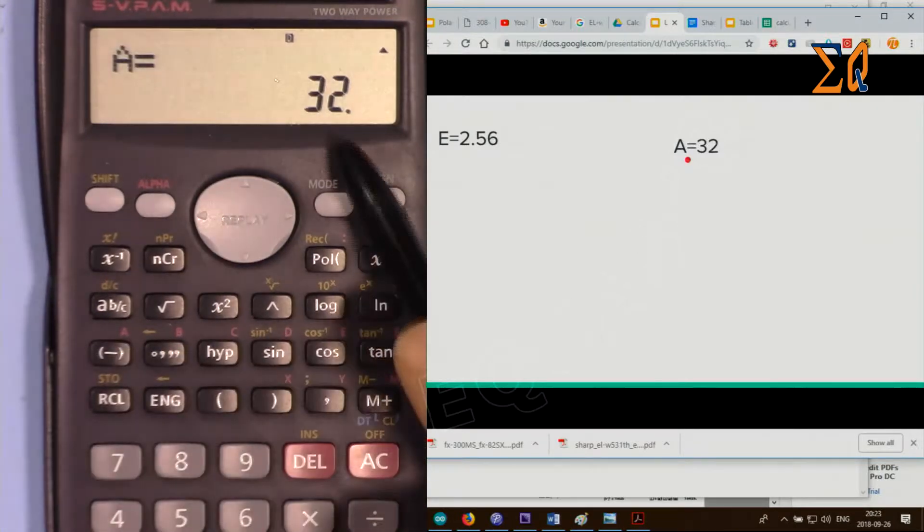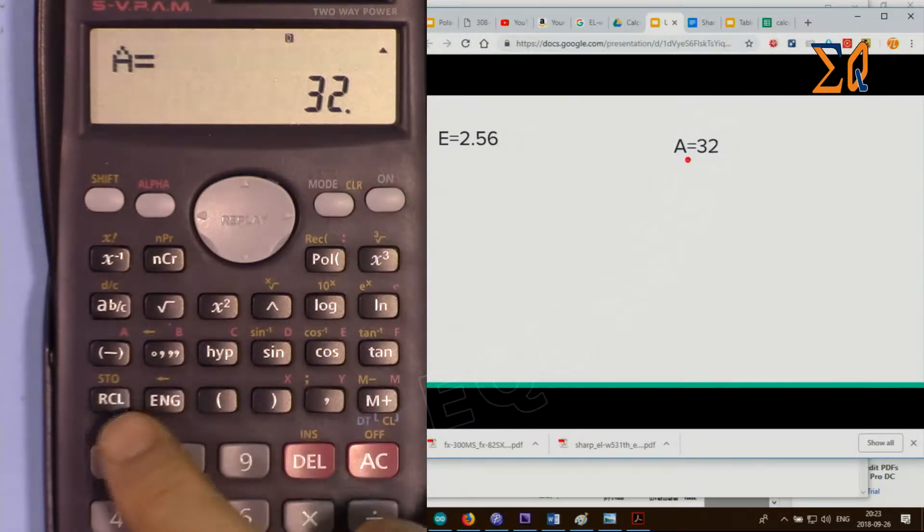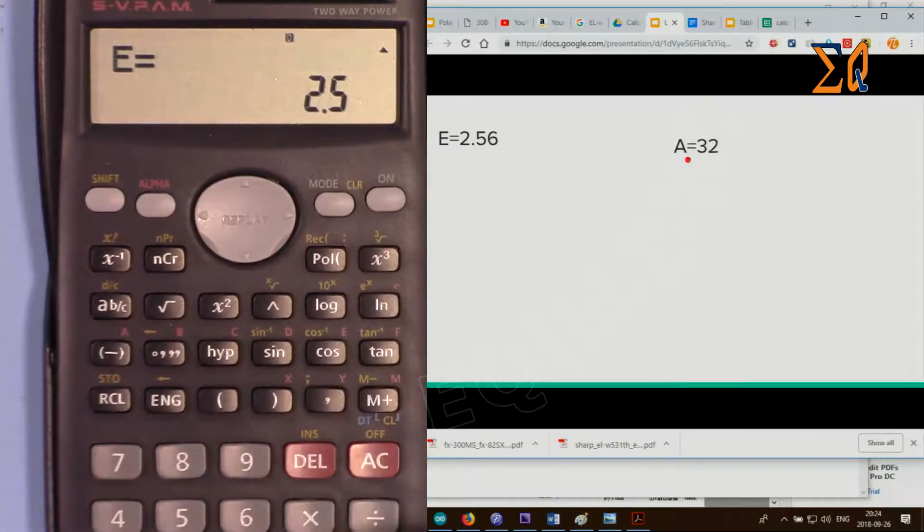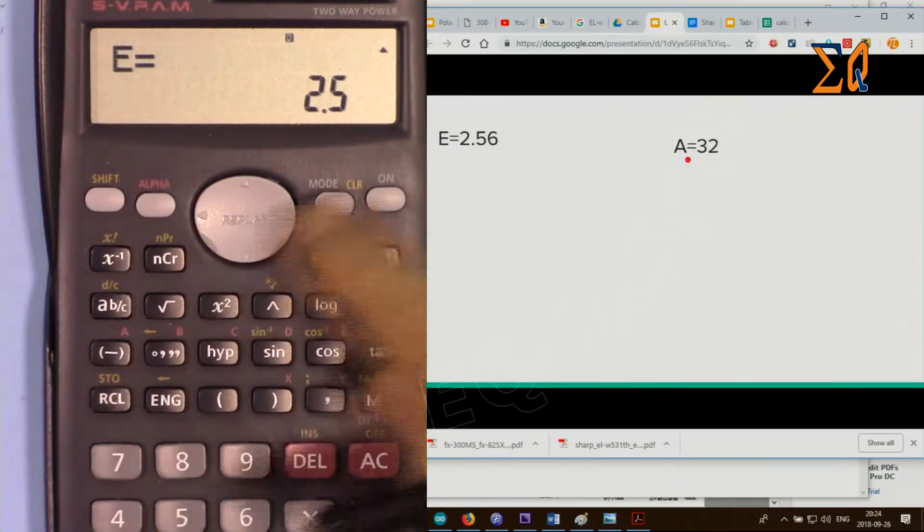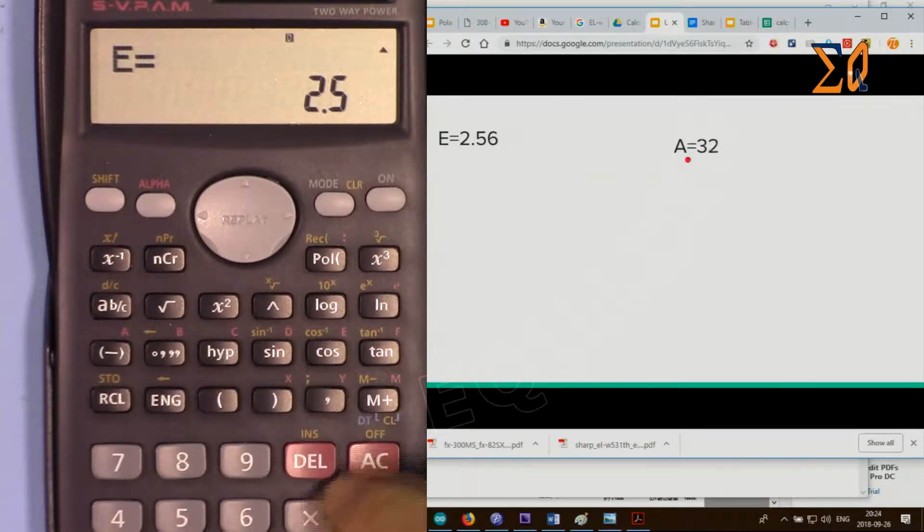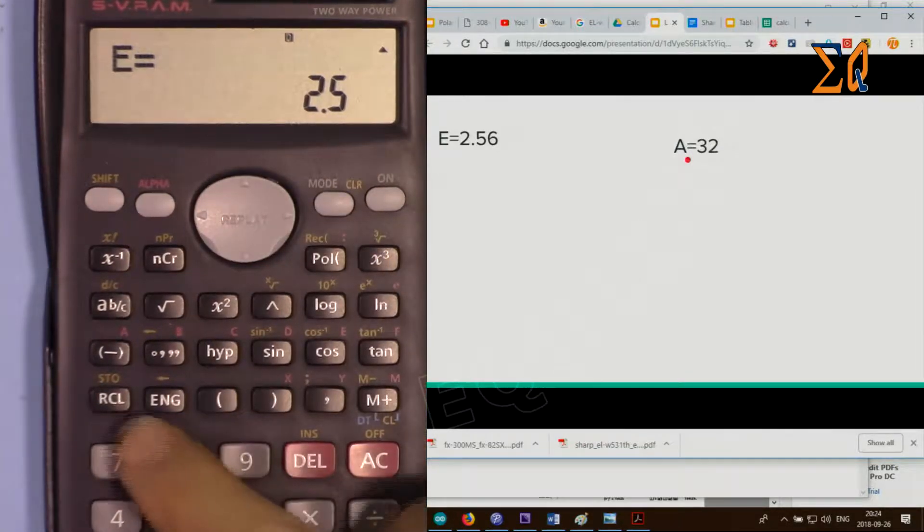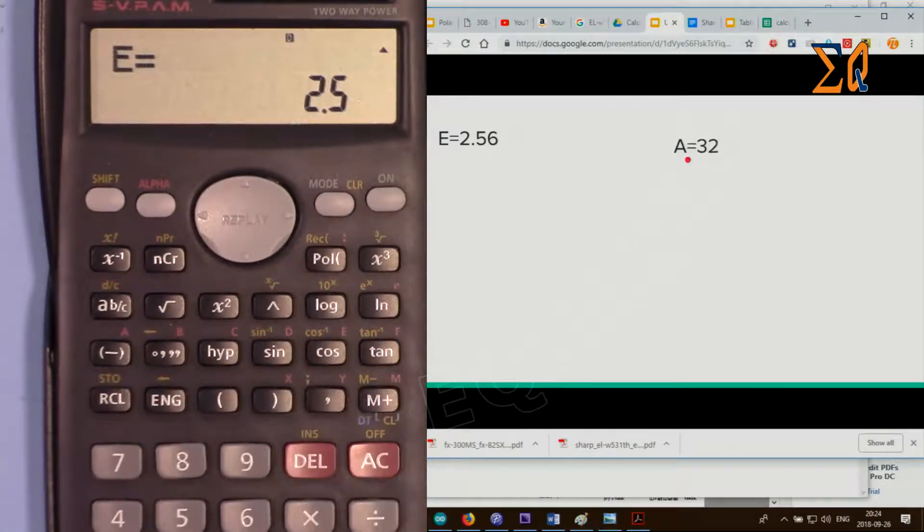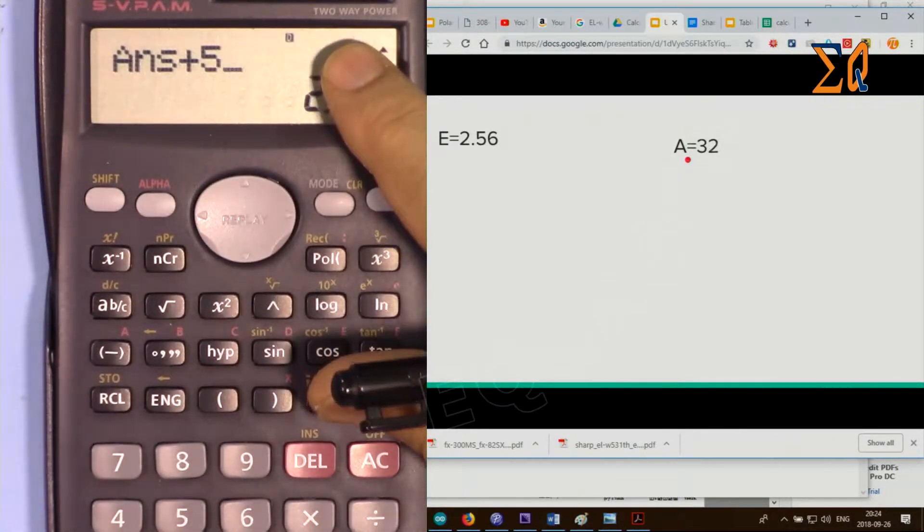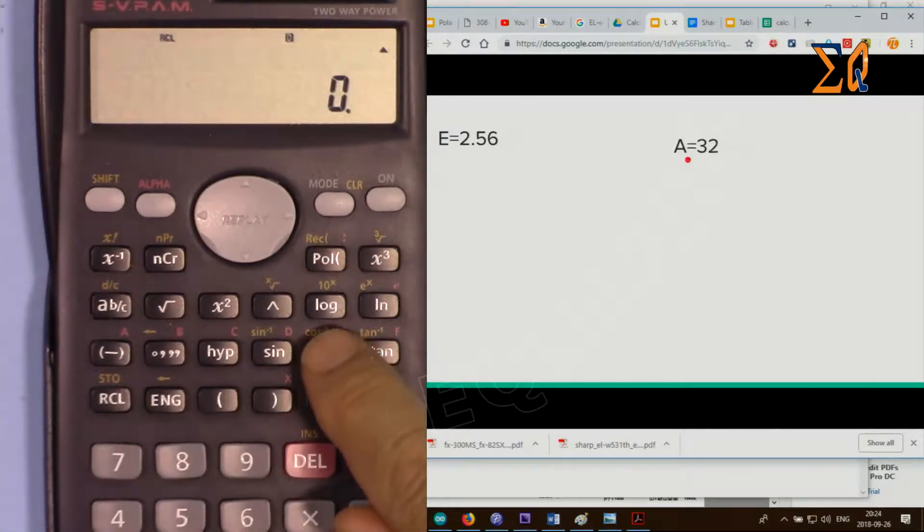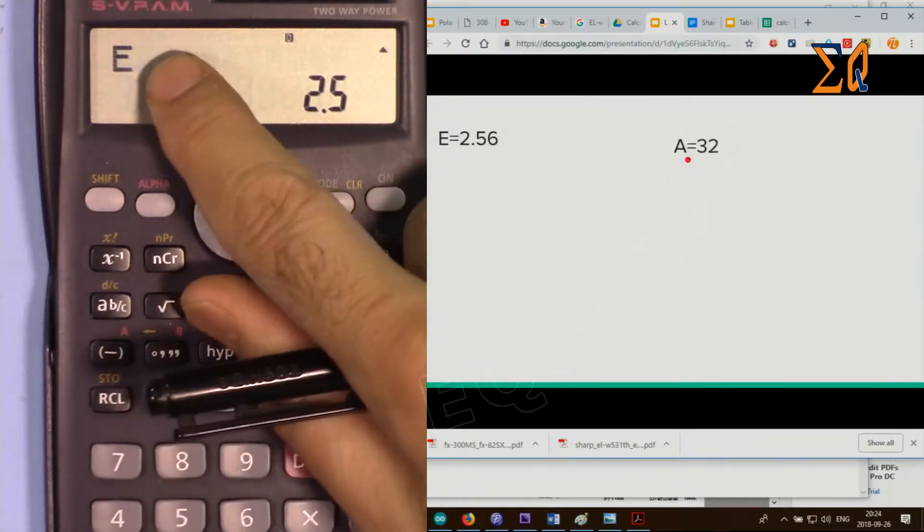If you want to recall A, press recall and A, so it brings 32. If you want to bring E, recall E. Now you can do a calculation or anything that you want with the value. For example, here we can say E plus 5. Recall E plus 5, it gives the answer.